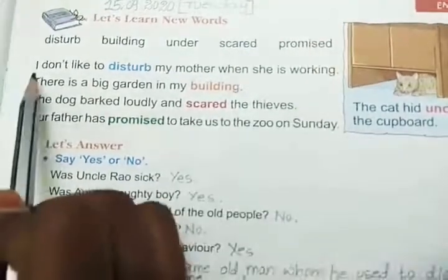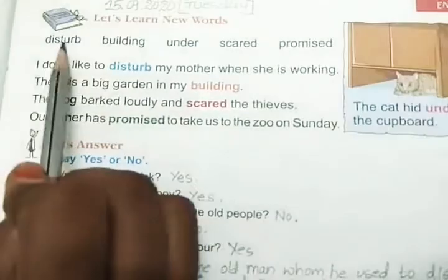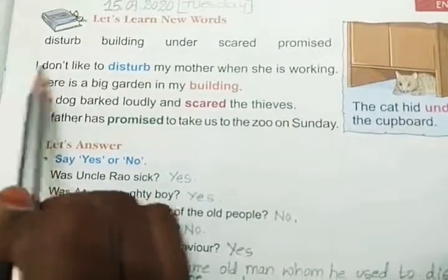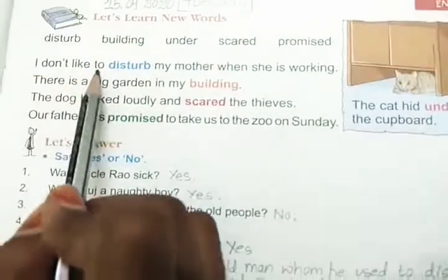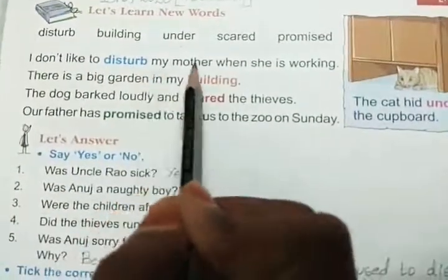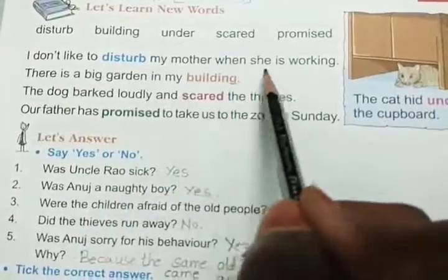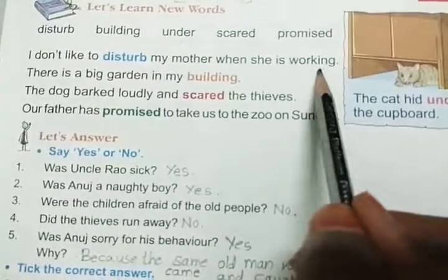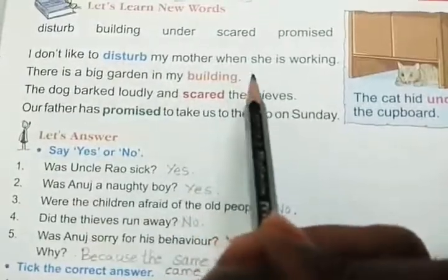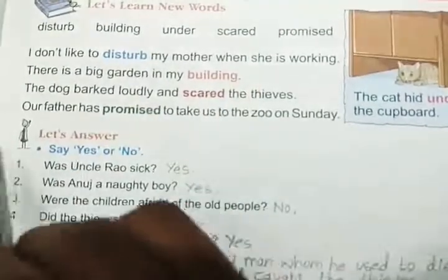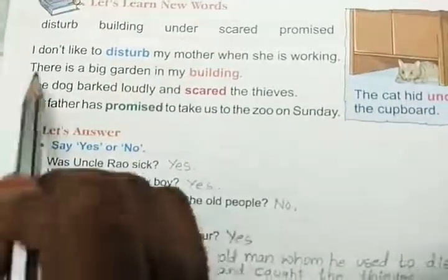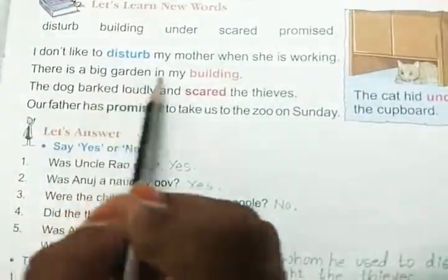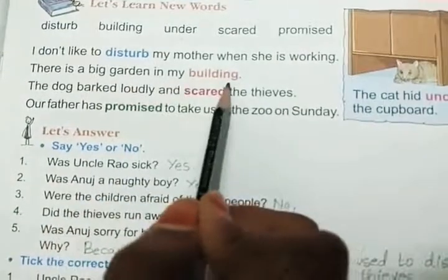Let us read the sentences. Disturb: I don't like to disturb my mother when she is working. Next, building: There is a big garden in my building.